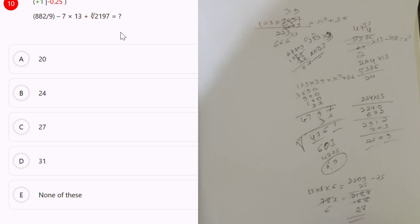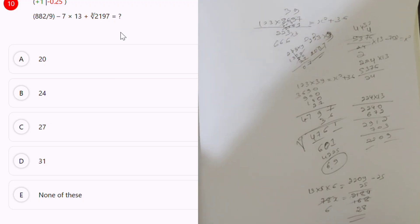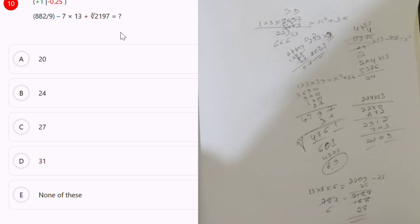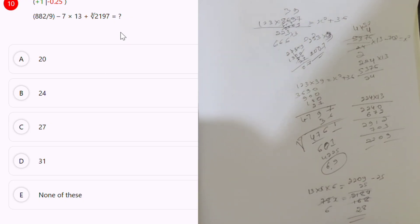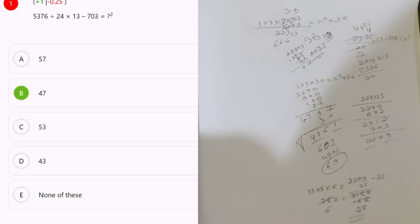88, 88, 2 divided by 9, minus 7 into 13, plus 13, which is equal to x. 98 minus 70, 97 plus 13. 20 is the answer.